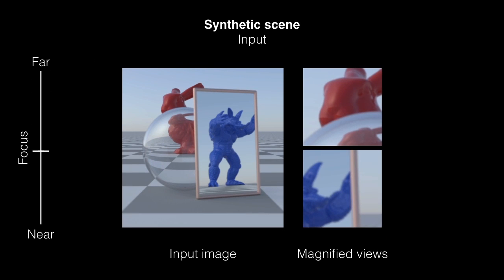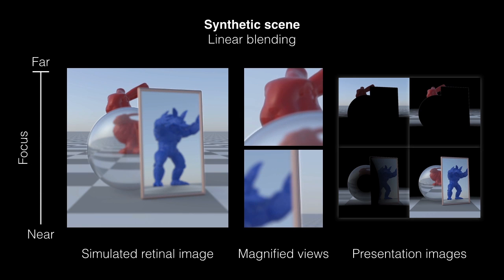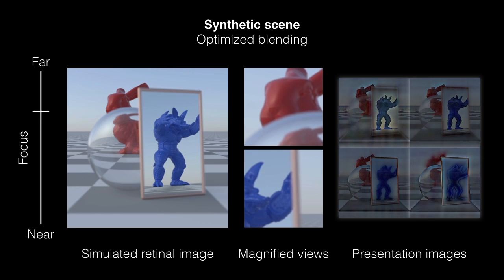Here we show a rendered scene with salient reflections and refractions, such as the armadillo and the mirror. These non-Lambertian effects cannot always be assigned a single consistent distance. Linear blending does not accurately reproduce these effects, incorrectly placing them at the distance of the specular surface. Artifacts are also visible at occlusion boundaries. Optimization correctly reproduces the behavior of the reflected and refracted imagery, as well as high quality occlusion edges.